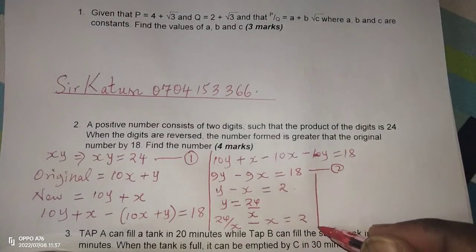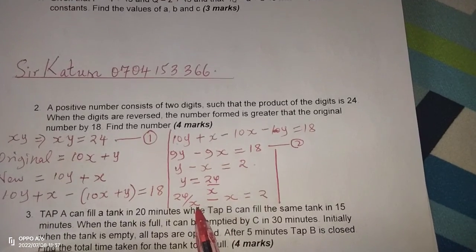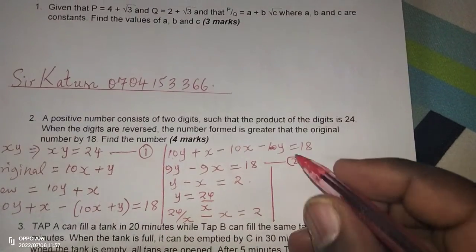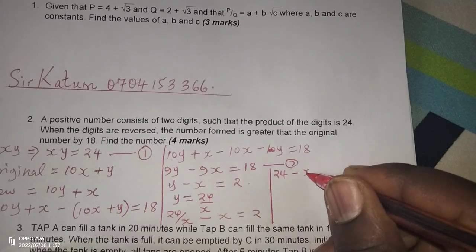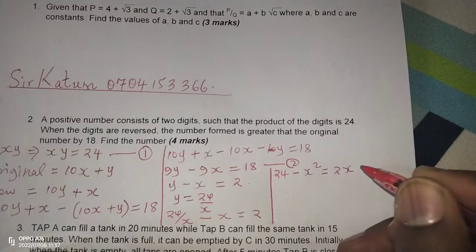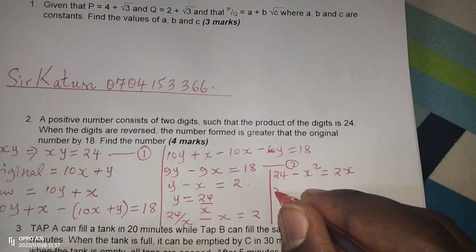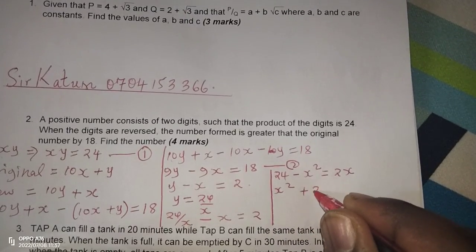Then after this, to do away with X which is in the denominator, we can multiply each term with X, such that this becomes 24 minus X squared equals 2X. Then now we rearrange the equation, starting with X squared, and X comes to this side with plus 2X here, then minus 24 equals 0.